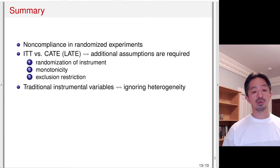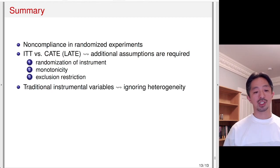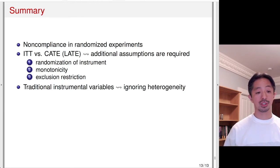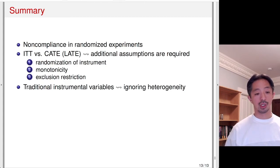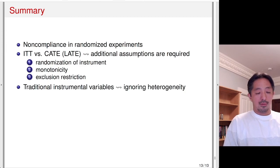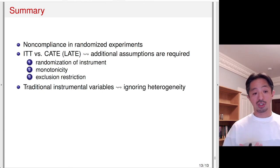In the traditional instrumental variables literature, there was no distinction between compliers and non-compliers — the instrument was treated as a magic bullet solving endogeneity. But as we've shown, even if the instrument satisfies the required assumptions, the quantity you get is only applicable to compliers. Unless the average treatment effect for compliers equals the average treatment effect for non-compliers, we cannot generalize the IV finding to the entire population. For non-compliers — always takers or never takers — it's very difficult to estimate the average treatment effect because the instrument doesn't work for them.